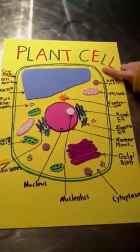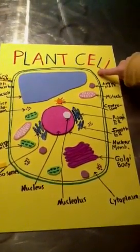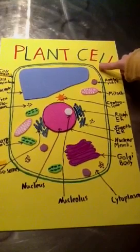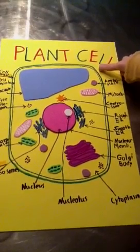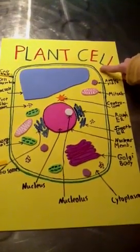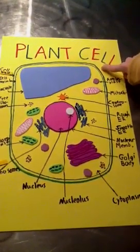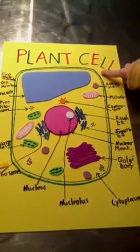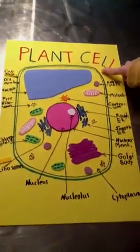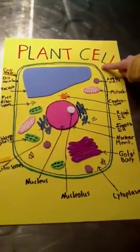The cell wall is made of cellulose. It provides and maintains the shape of the cell and acts like a protective barrier.